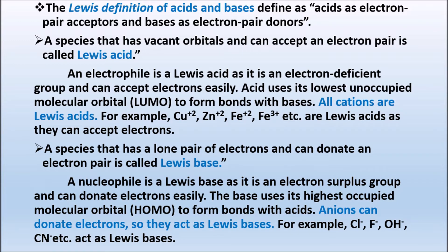So the definition of acid and base depends mainly on three theories: Arrhenius theory of acid and base, Bronsted-Lowry theory of acid and base, and Lewis theory of acid and base.